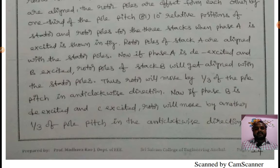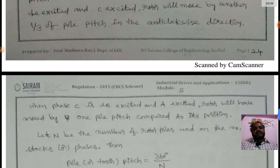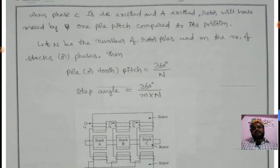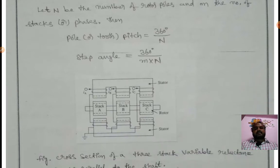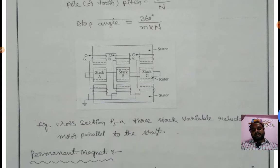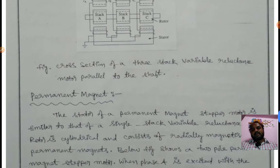Thus rotor will move by one-third of pole pitch in anti-clockwise direction. Now if phase B is de-excited and phase C excited, rotor will move by another one-third of pole pitch. Pole pitch is 360 by n, and step angle is 360 by n by m into n.